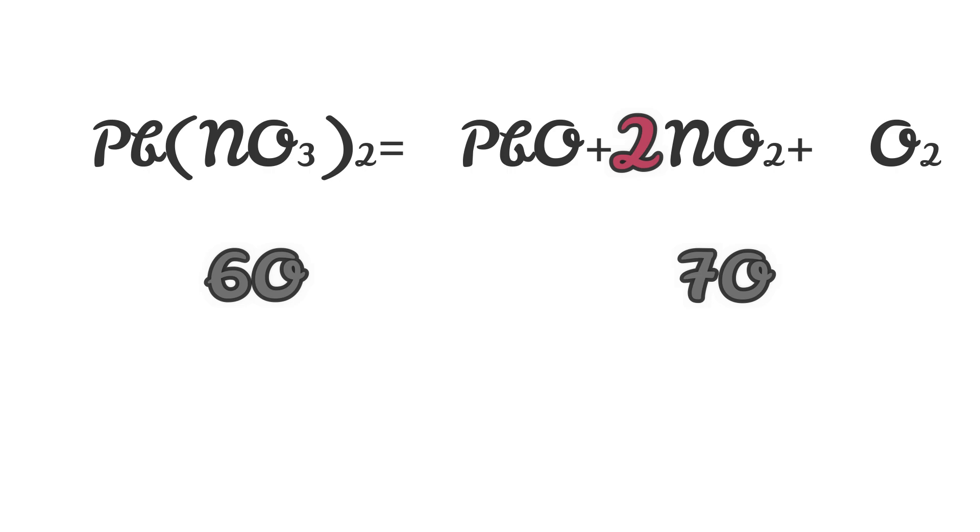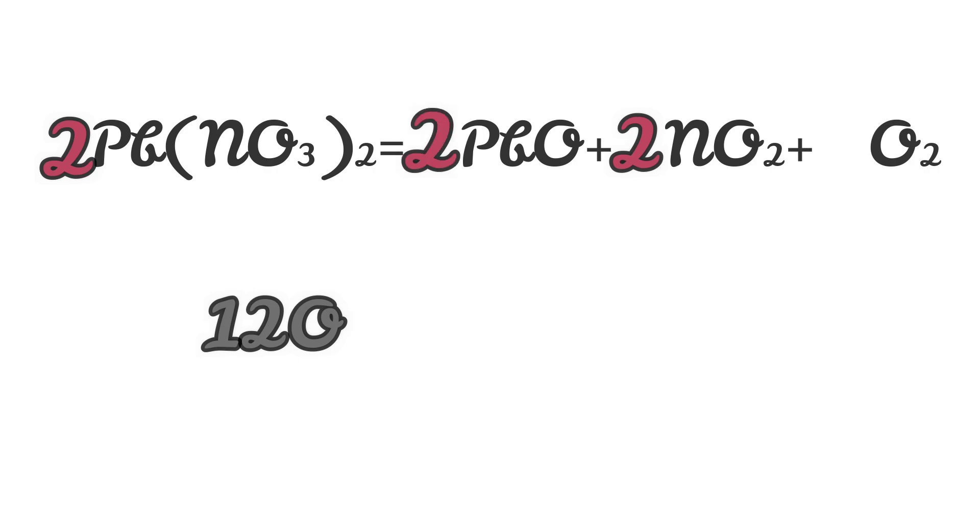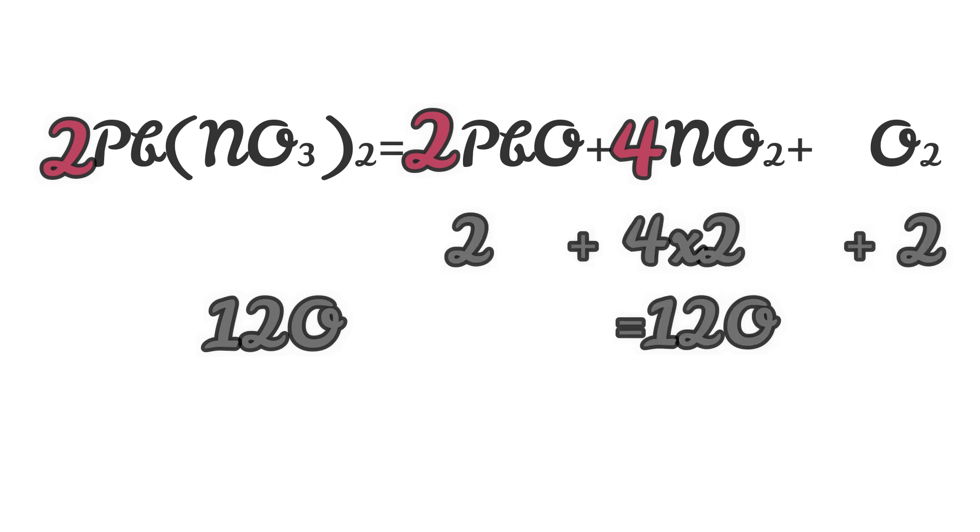The correct way is to put 2 before Pb(NO3)2 and make number of oxygens in reactant 12. Now we will come to the product side, and to match the number of oxygens we will put 2 in front of PbO and change the 2 in front of NO2 into 4. The number of oxygens will become 12 in products.